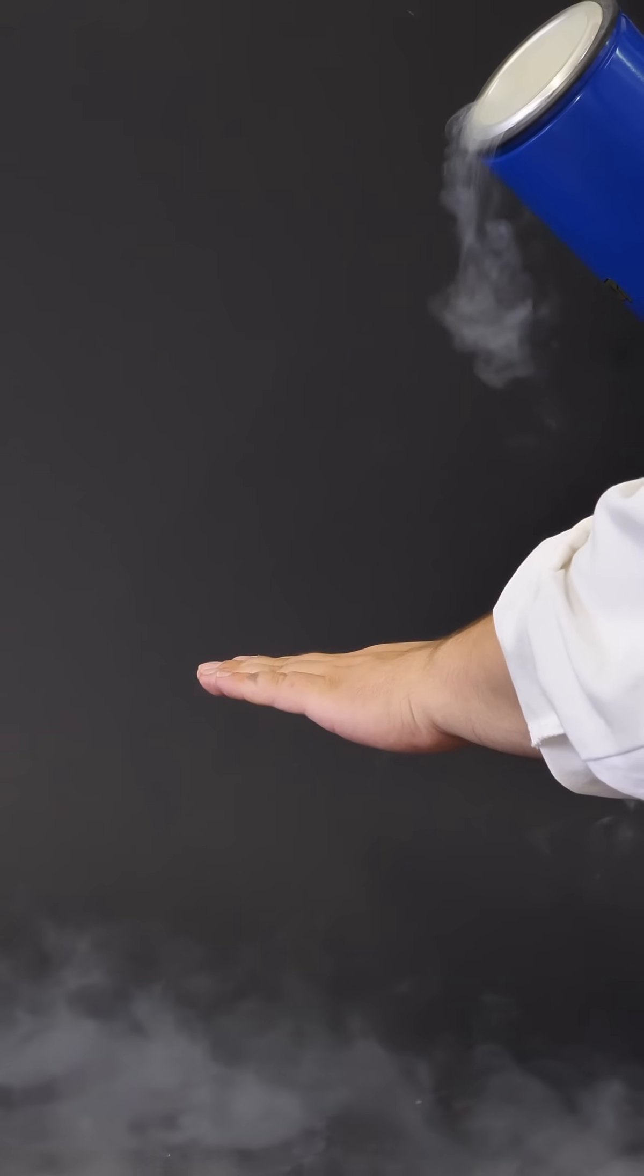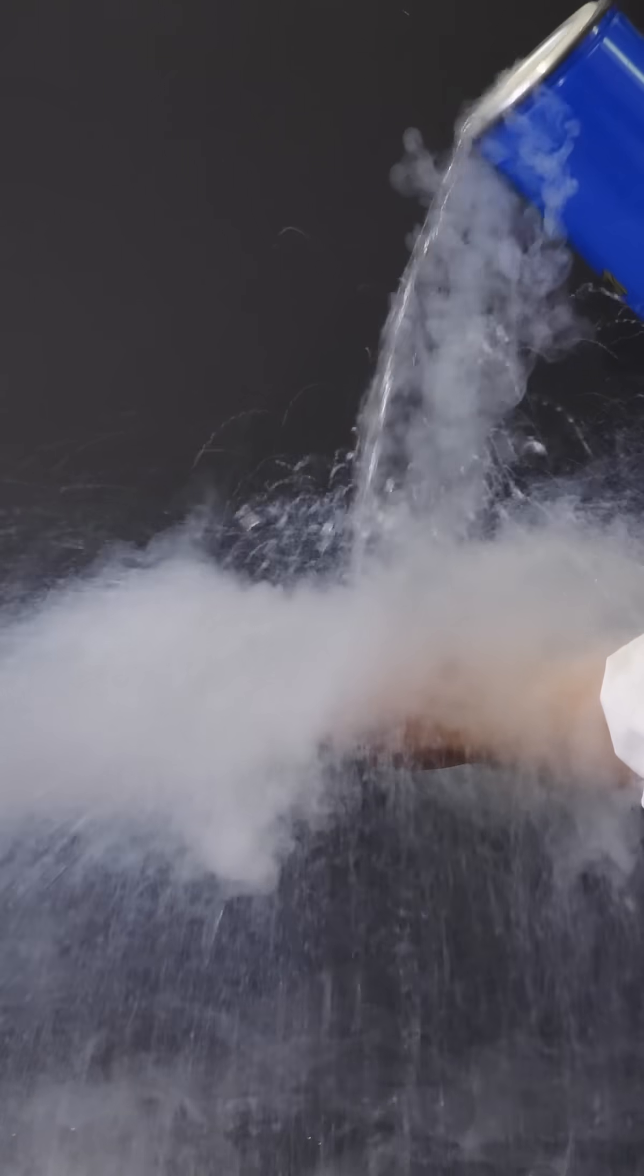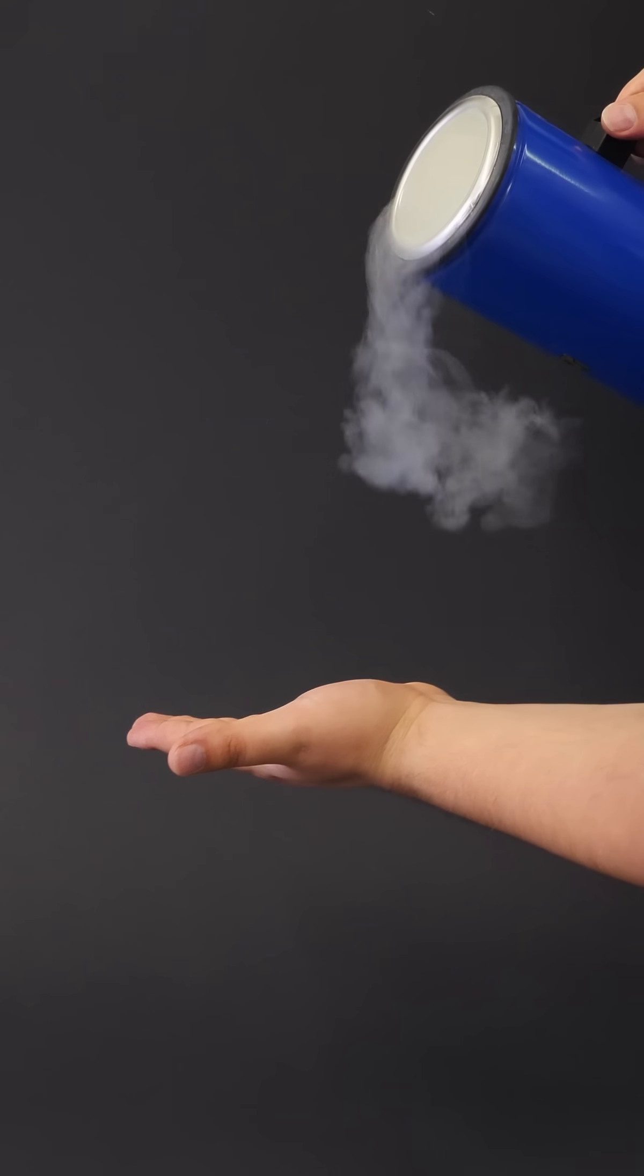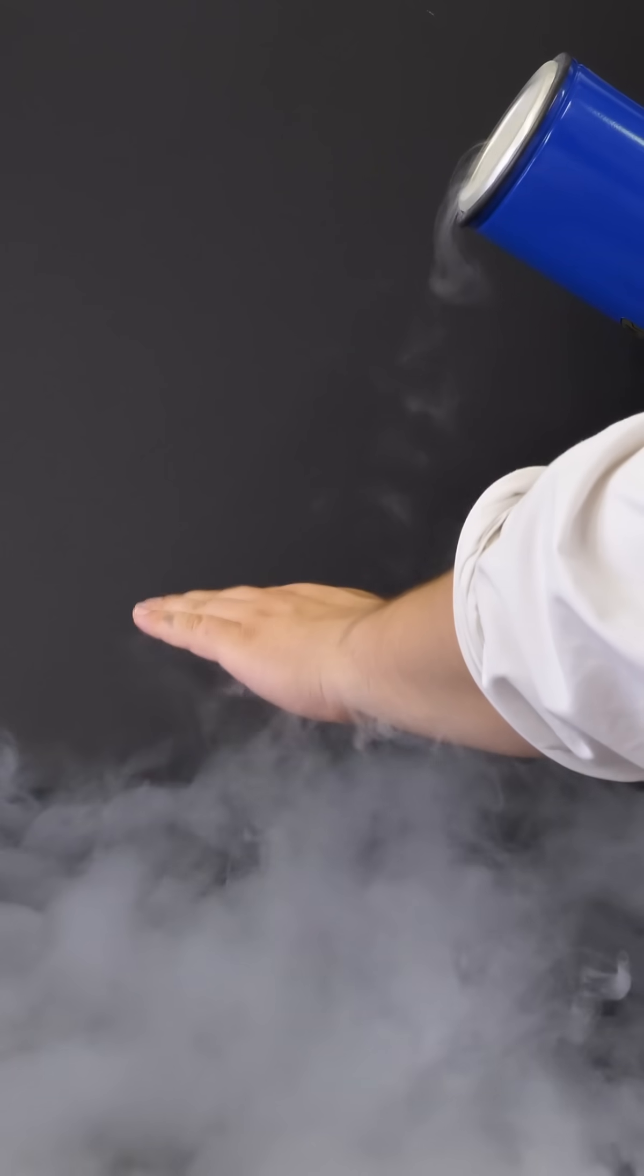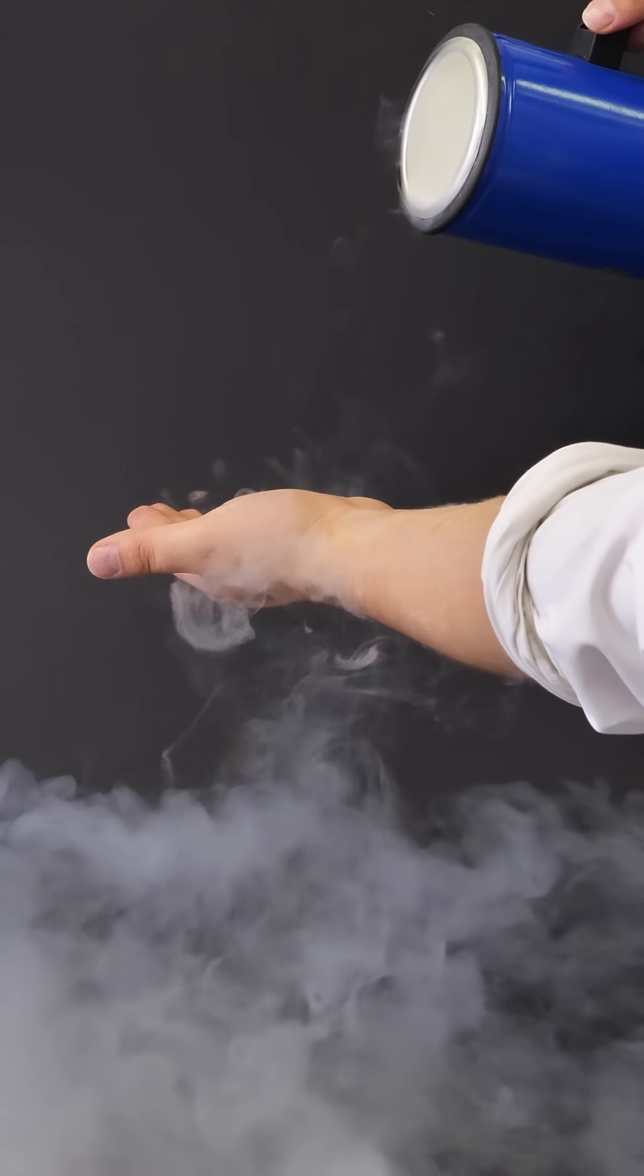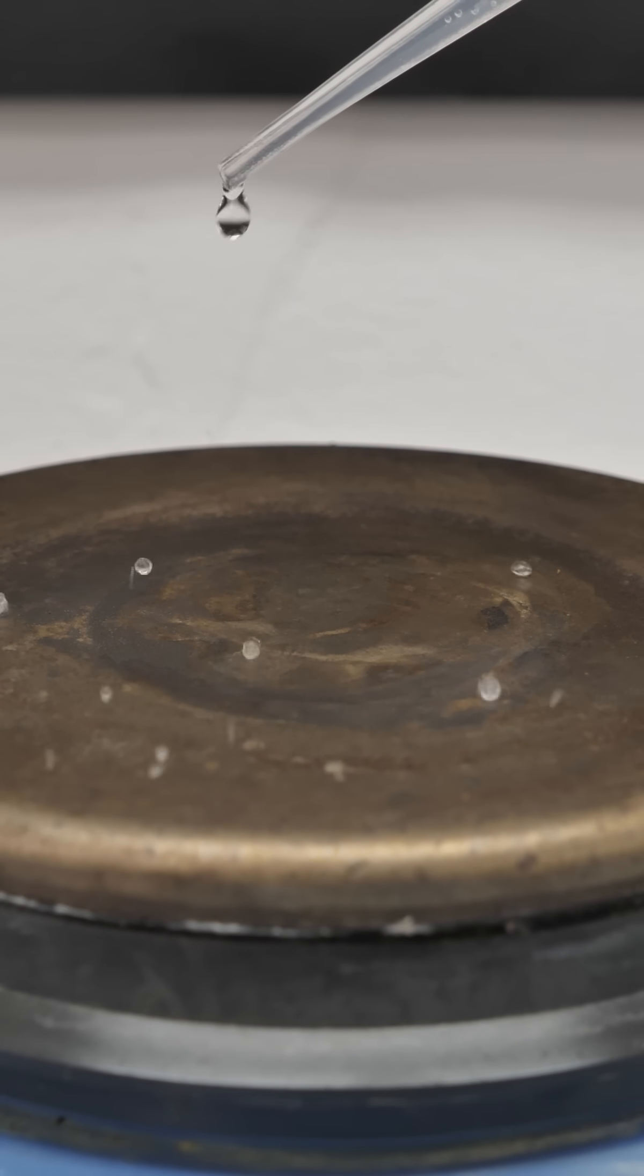When your skin touches liquid nitrogen, a small layer of it instantly turns into gas. That gas forms a thin cushion around your skin and insulates it. This means the extreme cold doesn't immediately reach your hand. But keep in mind, the gas is still super cold, so your hand will start cooling down eventually. It just doesn't happen as quickly as it would if the liquid touched the skin directly.